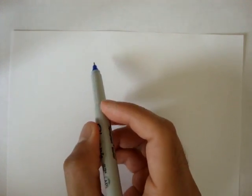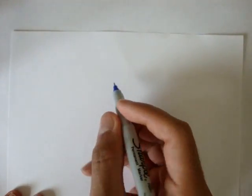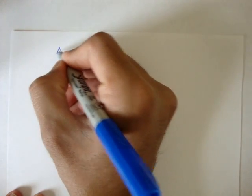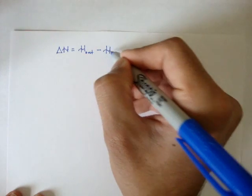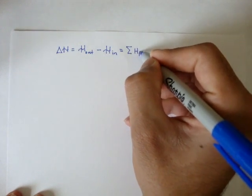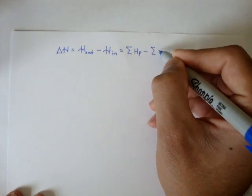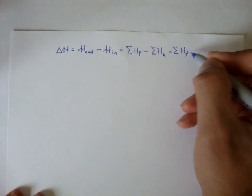Let's talk about the Darcy-Weisbach equation. For a while, we've been using our total energy head equation to find pump heads, turbine heads, and frictional losses. That equation was: our change in total energy head equals the energy head coming out of the pipe minus the energy head coming in, which equals all of the pump heads minus all of the turbine heads minus all of the frictional head losses.